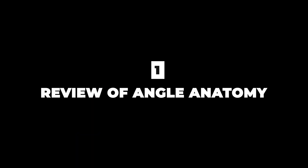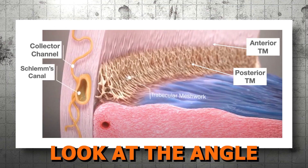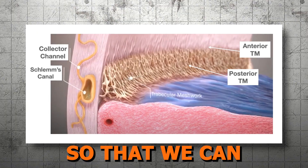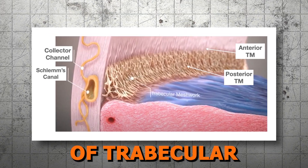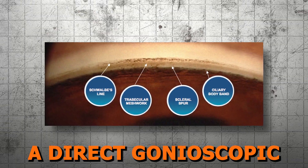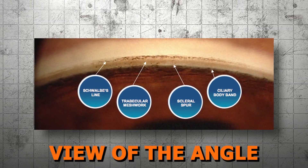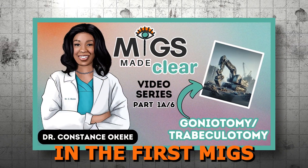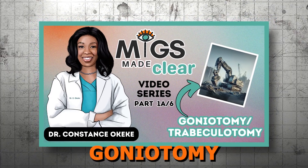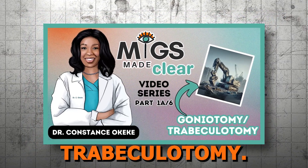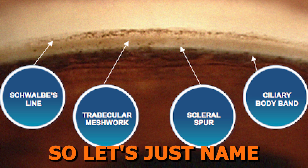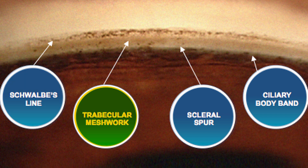Lesson 1: Review of Angle Anatomy. First, let's look quickly at the angle anatomy of the trabecular outflow system and the potential areas of resistance that affect it, so that we can better understand the mechanism of action for this class of trabecular bypass stents. In the picture is a direct gonioscopy view of the angle and the various structures that one should be able to identify. We did go over this in detail in the first MIGS Made Clear Part 1A video on goniotomy/trabeculotomy. So let's just name the key structures: Schwalbe's line, trabecular meshwork, scleral spur, and ciliary body band.